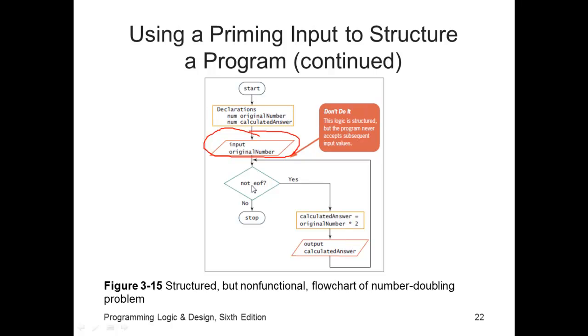This is not functional because we don't change the original number. The original number needs to be changed somewhere in the body of the loop. Because if the original number evaluates to yes here, we're going to do the loop, we never change it. We're always going to be in that loop, so we have an infinite loop.